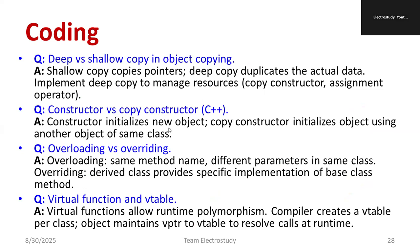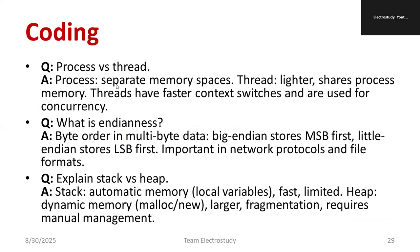Constructor versus copy constructor: a constructor initializes a new object; a copy constructor initializes an object using another object of the same class — this may also be asked in the technical round. Overloading: same method name with different parameters in the same class. Overriding: a derived class provides a specific implementation of a base class method. Virtual functions allow runtime polymorphism — the compiler creates a V-table per class, and the object maintains a VPTR to resolve calls at runtime. Process versus thread: a process has separate memory space; a thread is lighter and shares process memory. Threads have faster context switches and are used for concurrency.